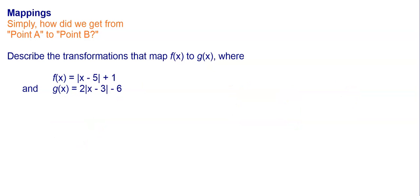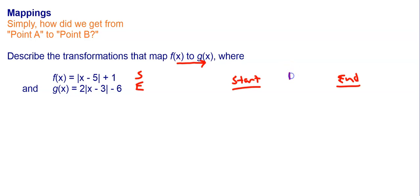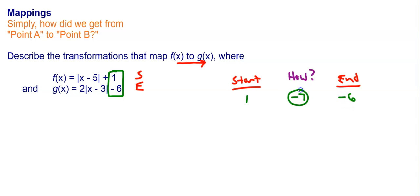Let's look at another one. Again, we're going from f to g — f is our starting point, g is our ending point. I'm going to start on the outside. I'm starting at a plus one and ending at a negative six. What plus one gives me negative six? That's going to be a minus seven — one minus seven gives me a negative six. So a minus seven on the outside means down seven.